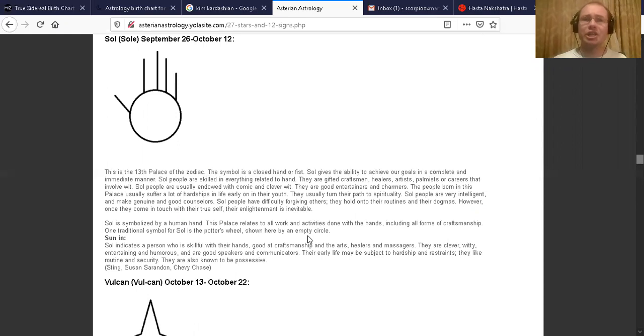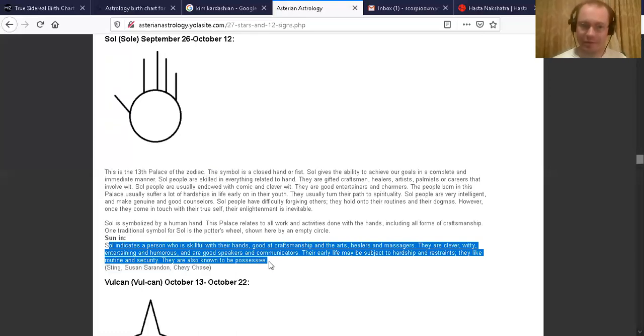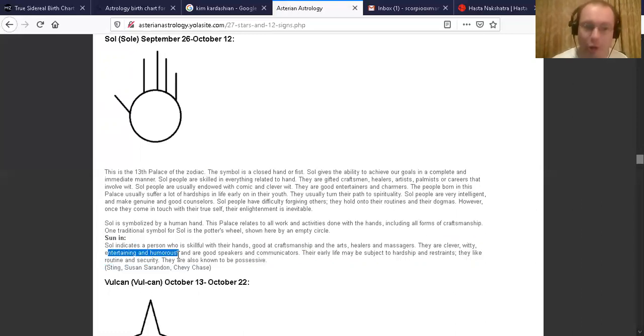Kim Kardashian, she was born in late morning. So the sun is more at that point, the sun is going to be more in power than the moon. She could be more like her sun sign of Hasta than she could be of her Purva Bhadrapada moon. Hasta indicates a person who is skillful with their hands. They are good craftsmen. They are good at craftsmanship and the arts, healers and massagers. They are clever, witty, entertaining, and humorous, and they are good speakers and communicators. And they like routine and security. Those are the description of Hasta natives, Kim Kardashian.